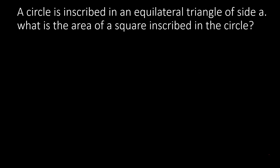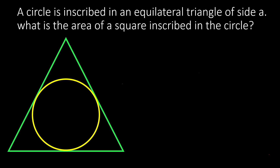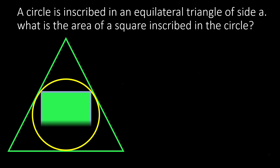A circle is inscribed in an equilateral triangle of side A. What is the area of the square inscribed in the circle? Let us draw the figure. This is the circle which is inscribed in an equilateral triangle, and there is a square inscribed in the circle. Now we have to find the area of this square.